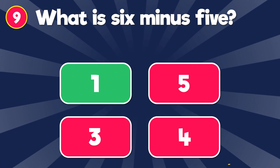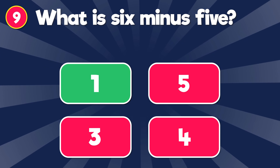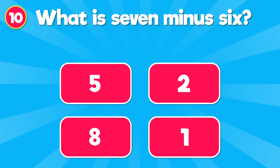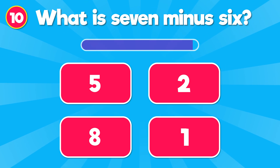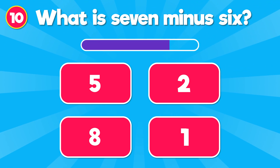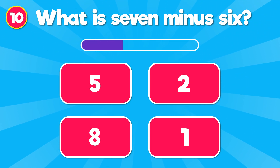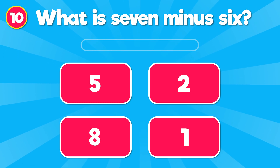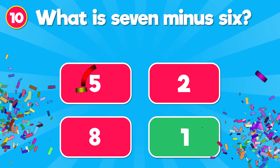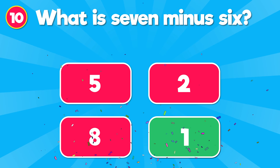What is 7 minus 5? The correct answer is 2. What is 7 minus 6? The correct answer is 1.